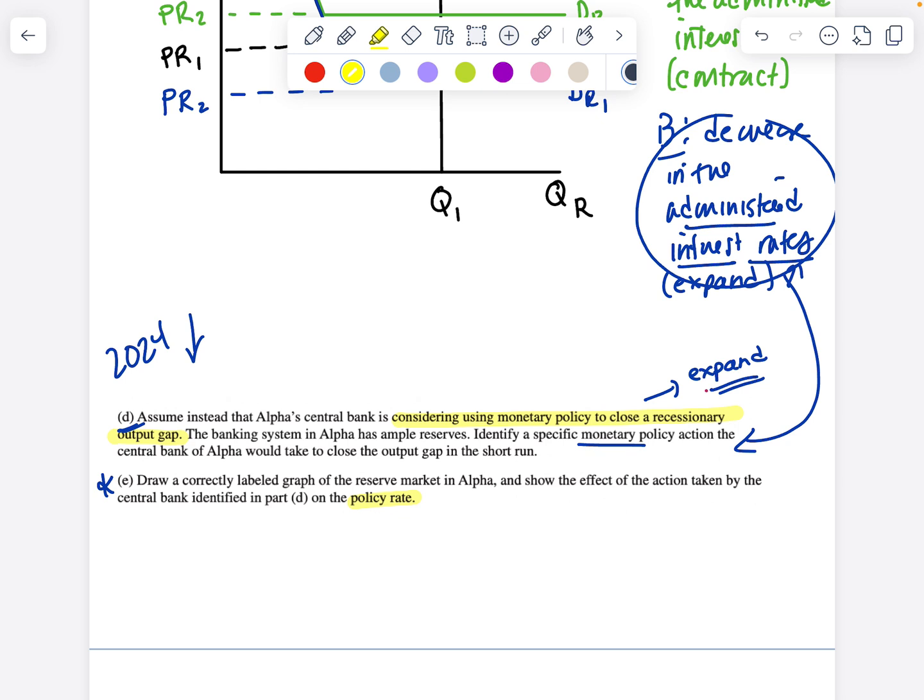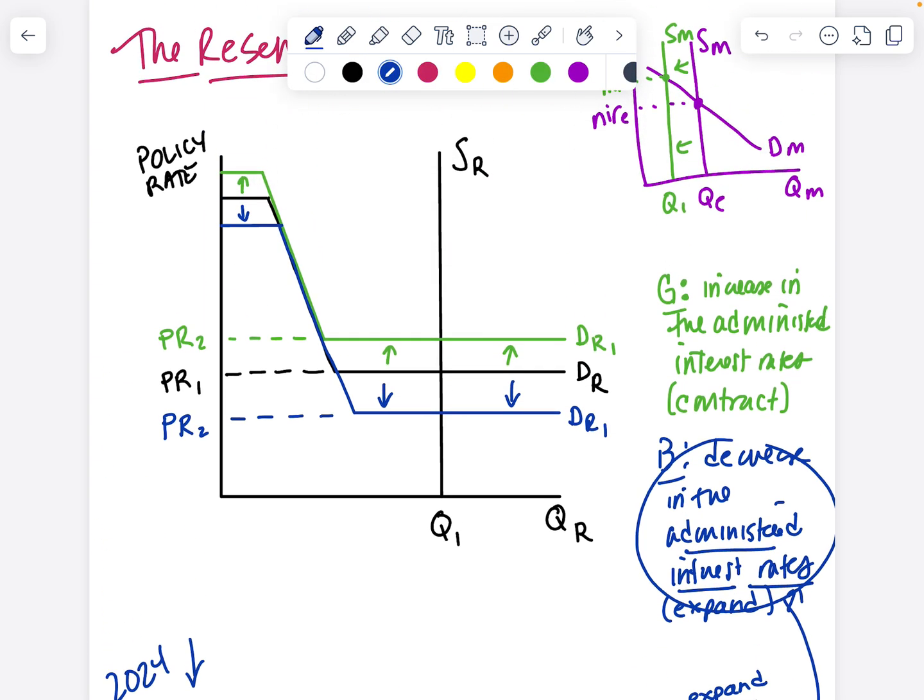I have a little coaching tip for you: if you say reduce the policy rate, you will not get credit for part D. You have to say administered interest rates. For part E, it now asks students to draw the graph that shows that. It says draw a correctly labeled graph in the reserve market, show the effect of the action taken by the central bank in D on the policy rate. Again, we're saying administered interest rates in part D, but our graph says policy rate. That is accurate, that is true, that is what you're supposed to do. So what would you do for E? You would do the blue graph that's on here. So you would start with the black lines, you'd label all those things, you'd bump down the interest rate. So that's how you might see this in a question.